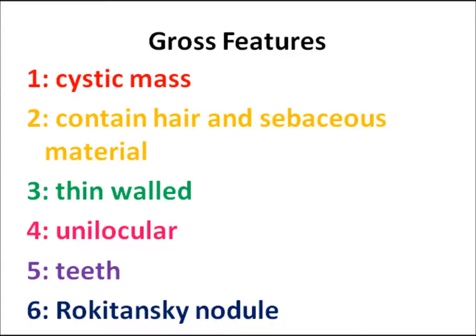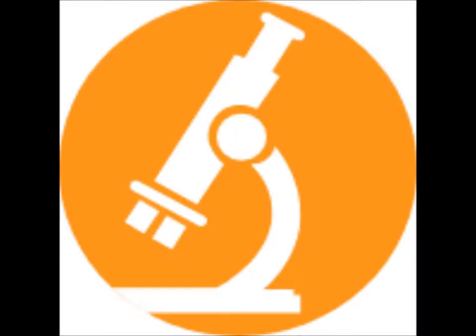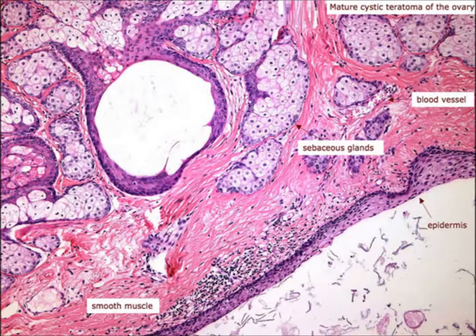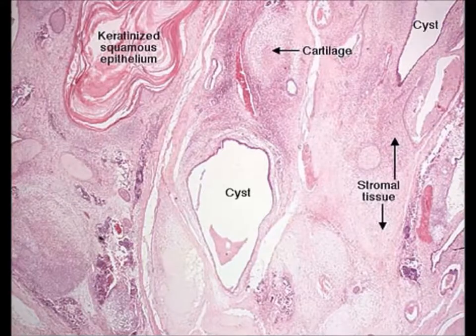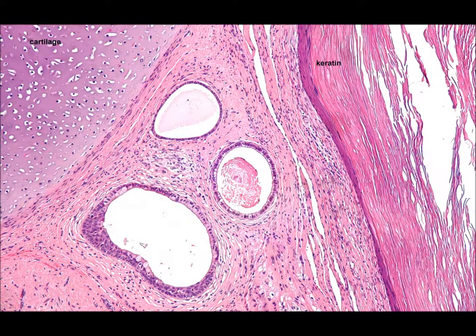To summarize the gross features: it is a cystic mass containing hair and sebaceous material, it is thin-walled and unilocular, teeth are present, and there is a Rokitansky nodule. If we take a section and see under the microscope — because they are lined by skin — you can see stratified squamous epithelium, keratin, and adnexa. In another view there is stromal tissue, cartilage, squamous epithelium.